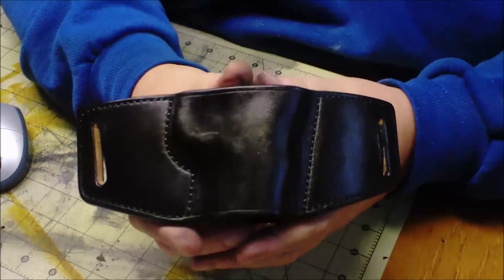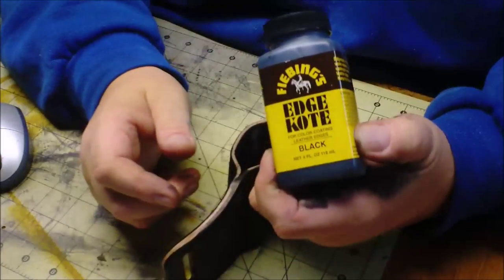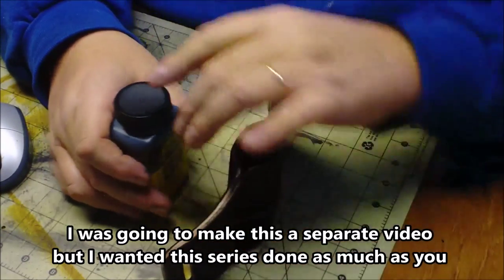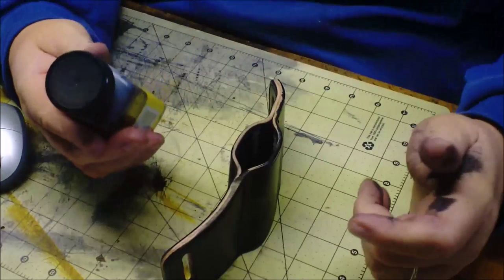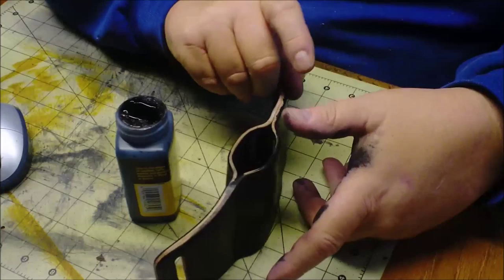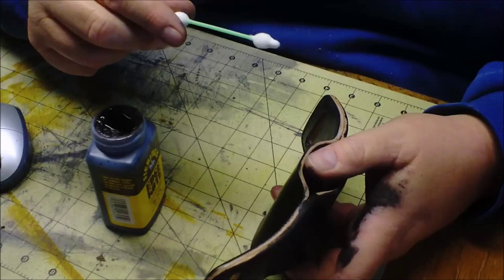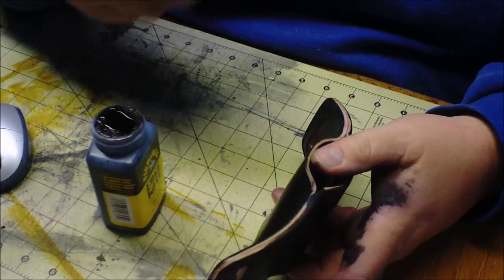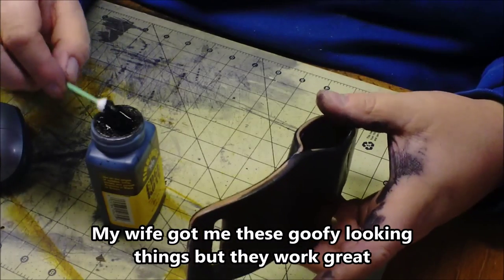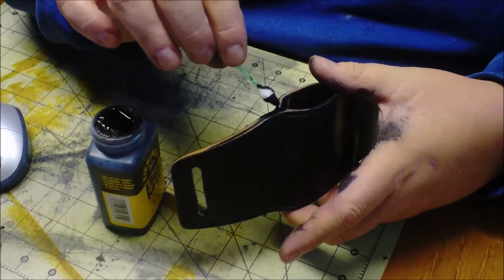So now we're going to use edge coat. I like to edge coat my holsters just because the edges take some abuse and this stuff is really good for abuse. I just use, I've used Q-tips, I've used paint brushes, daubers. I just kind of like the Q-tip - works pretty good. And you just kind of go around the edges.